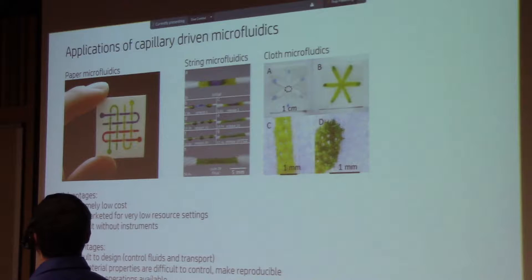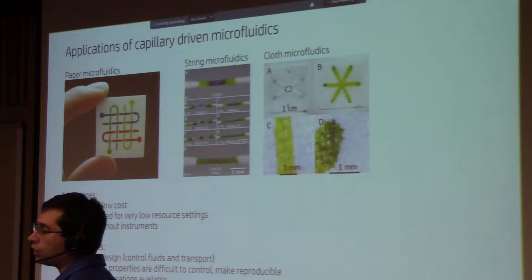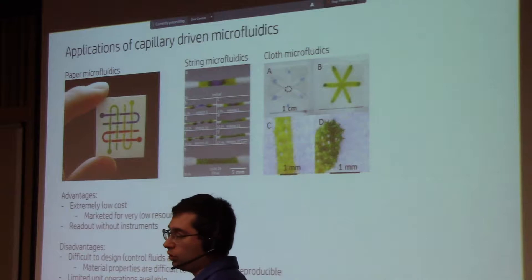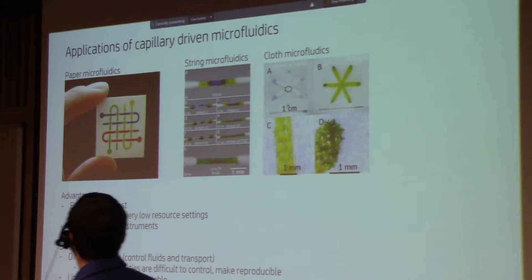And to confine the fluid, you basically change the surface properties of your paper or your cloth or whatever your medium is. For example, by filling it with wax or by filling it with sugar. Then the sugar can dissolve and it can form these one-time valves that direct the flow.